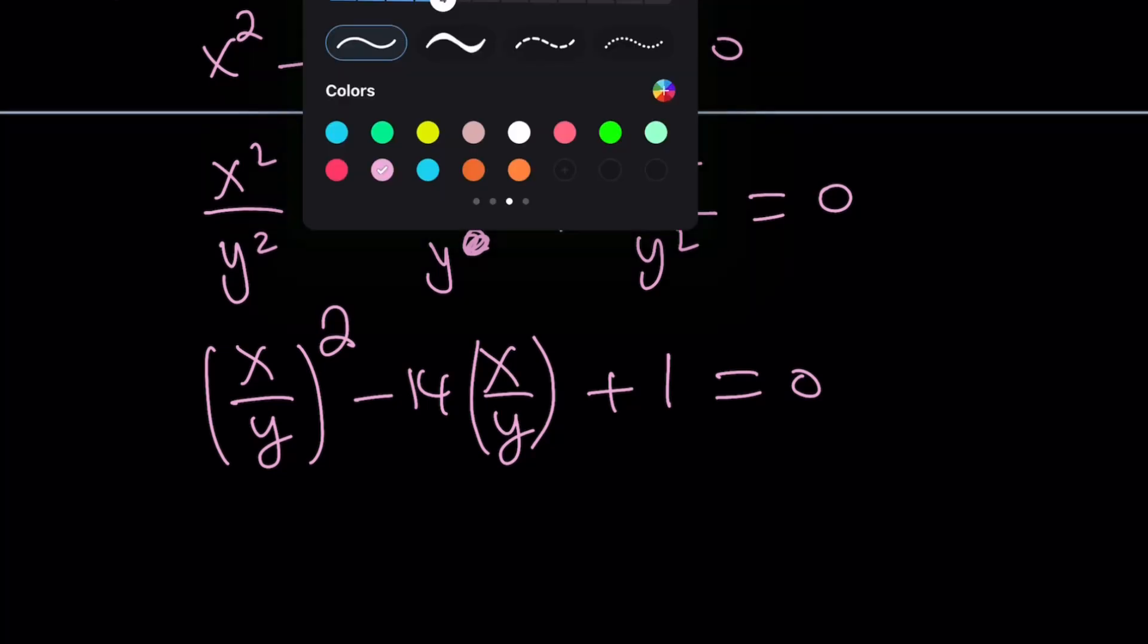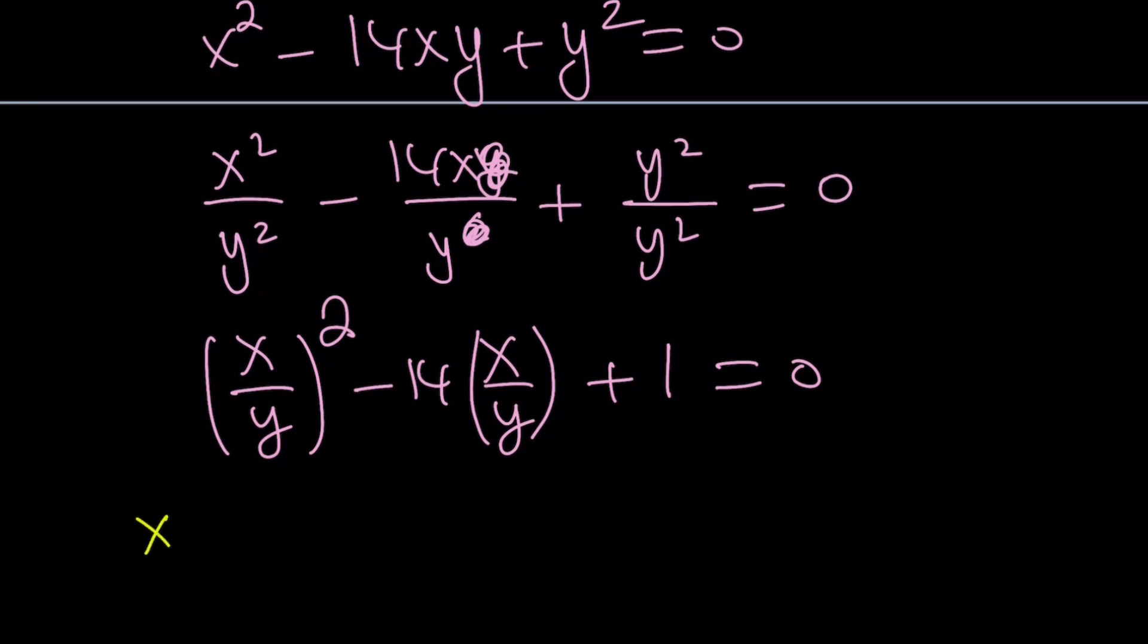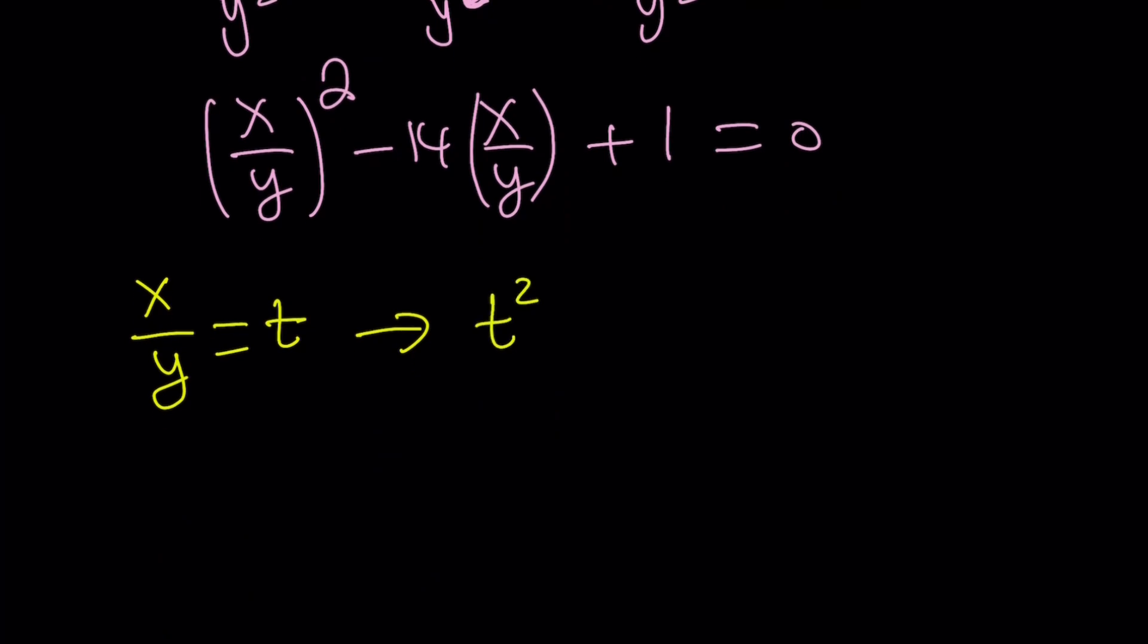So let's use substitution. Let's replace x over y with t. And that gives us t squared minus 14t plus 1 equals 0.